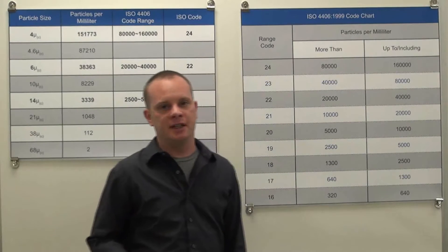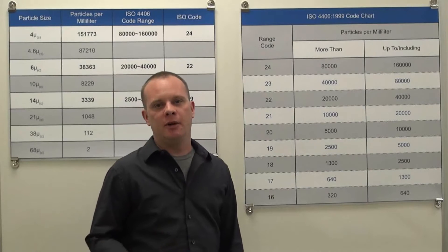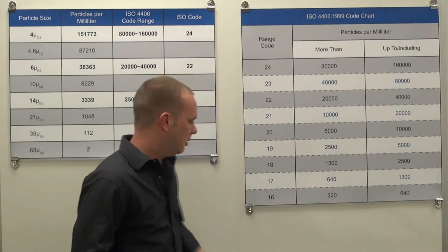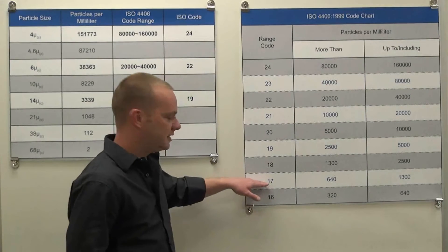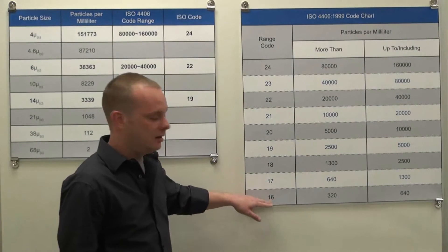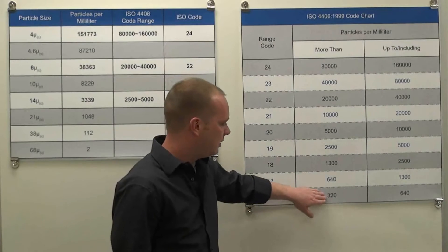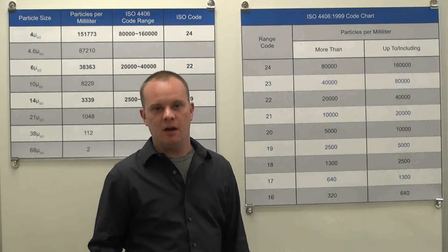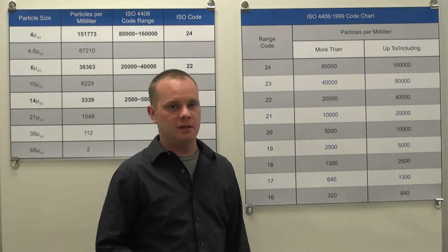Inversely, it's also important to note that as an ISO code drops by one, the range of particulate contamination found in the fluid is going to be cut in half. So, if we had an ISO code of 17 and that dropped to 16, then we would only have between 320 and 640 particles per milliliter of the specified micron size and larger.